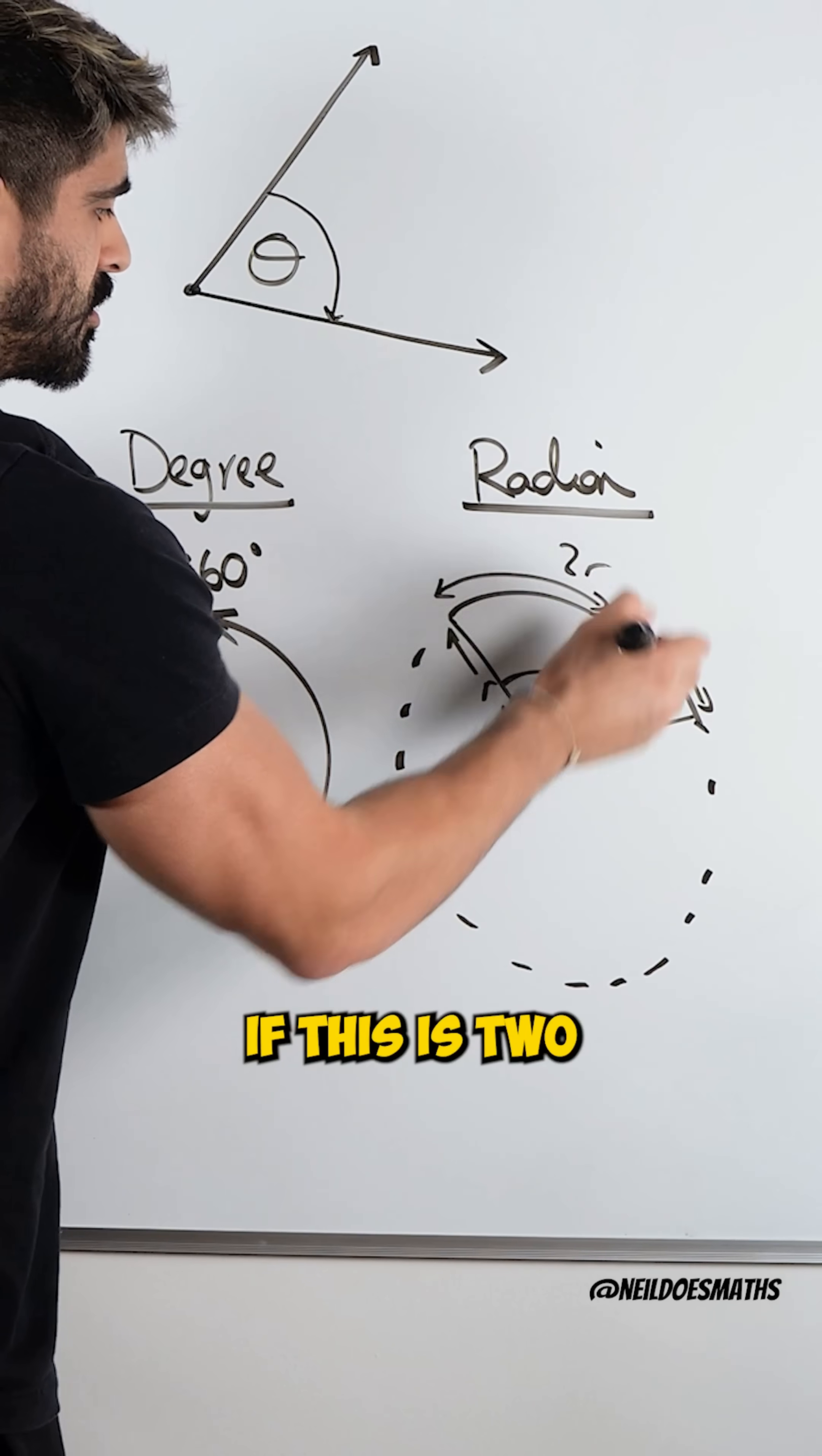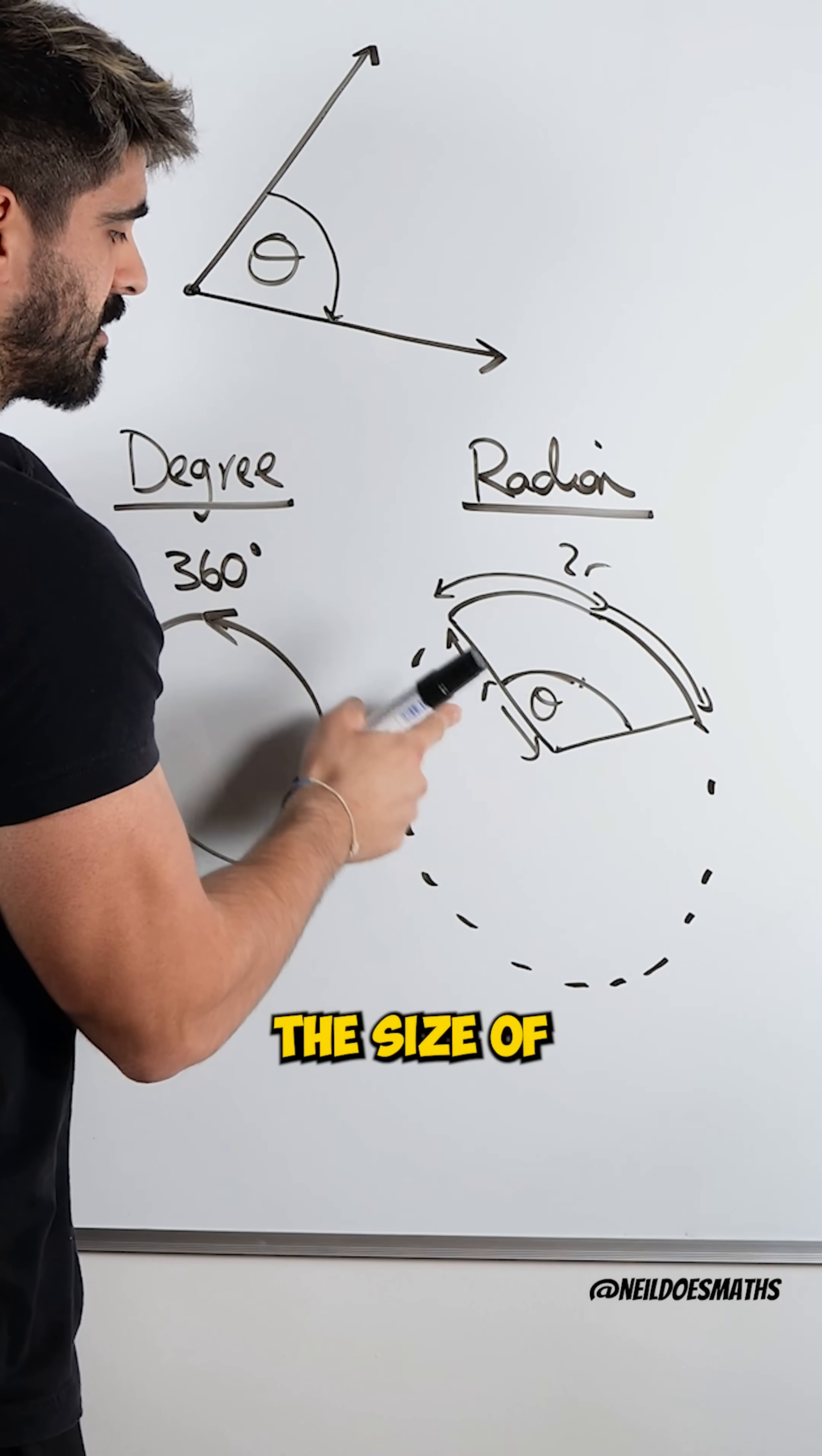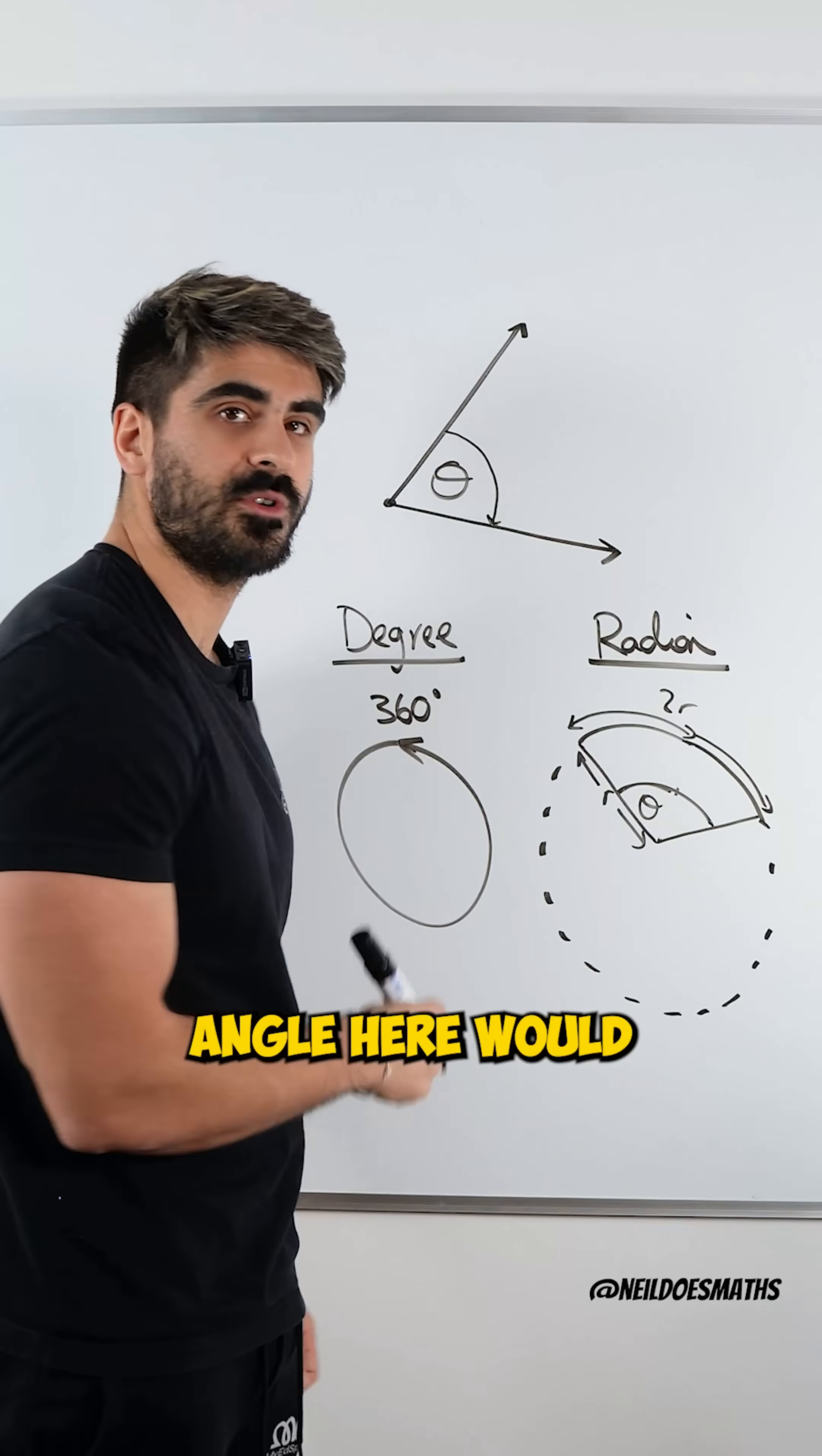If this is 2r, this is r. We're saying this is twice the size of the radius. So the angle here would be 2.